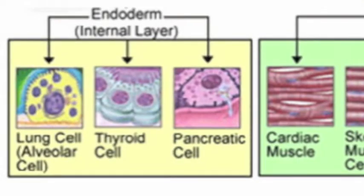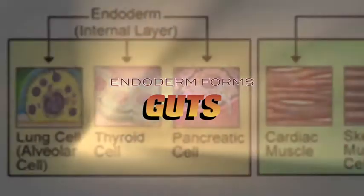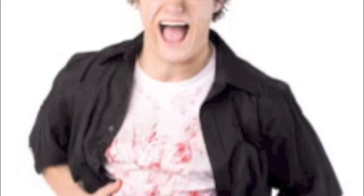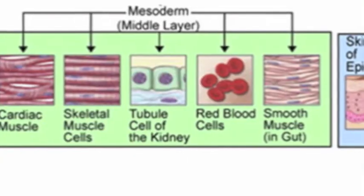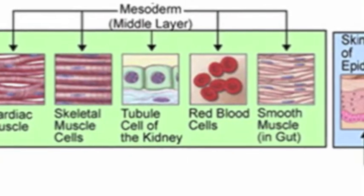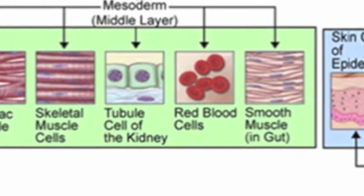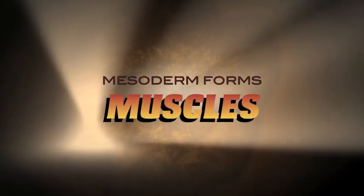As cells form the endoderm layer, they move toward the middle of the embryo to make the organism's insides, such as the liver, digestive tract, and lungs — endoderm forms guts. The mesodermal cells form the middle layer by moving between the other two layers to become the skeletal system, muscles, and vascular regions — mesoderm forms muscles.